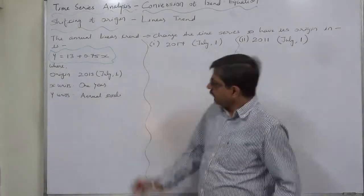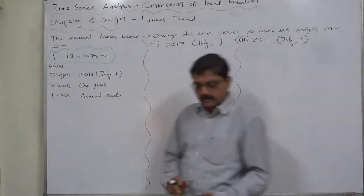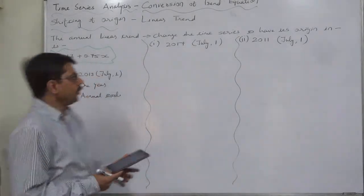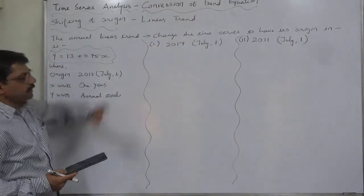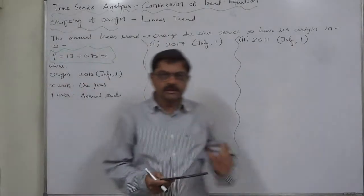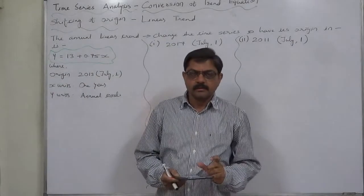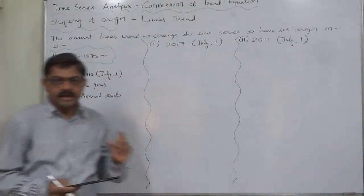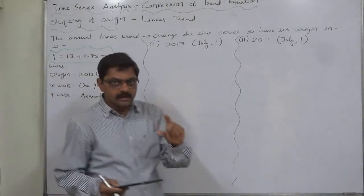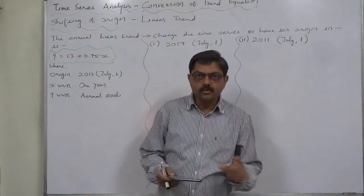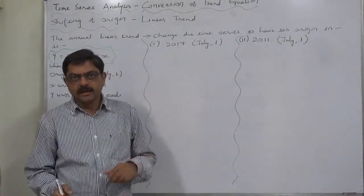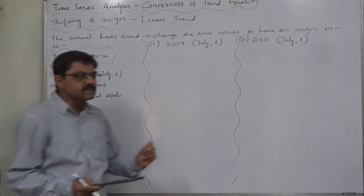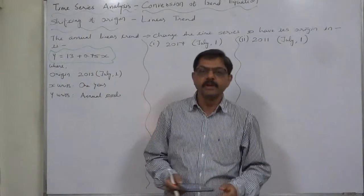If we want to change the trend equation, there can be two types of changes. One is shifting the origin. As we know, to fit a trend we take the middle year or mean of the two middle years as origin. Now after fitting the trend, if we want to change the origin of the trend, what should we do?